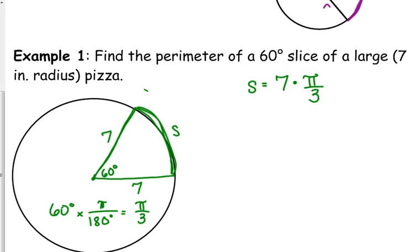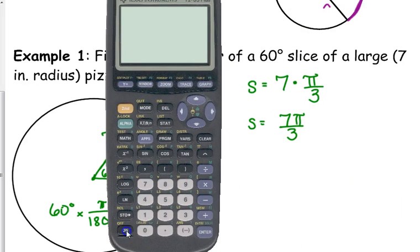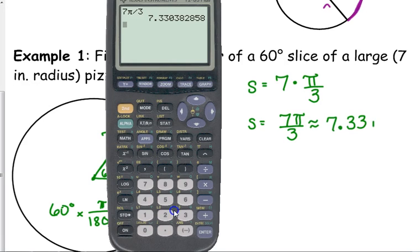So, now, normally, if this were just a what's the arc length problem, I would ask you to leave it as 7 pi over 3, but we're talking about the actual perimeter of this pizza. So, in terms of pi, even, you know, that's not really doing us a lot of good, so let's multiply that out. 7 pi divided by 3, so it's approximately 7.33 inches.